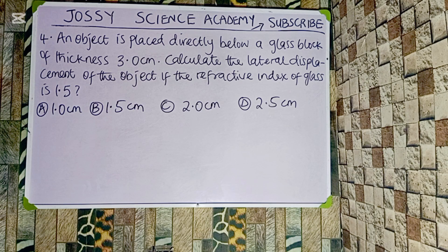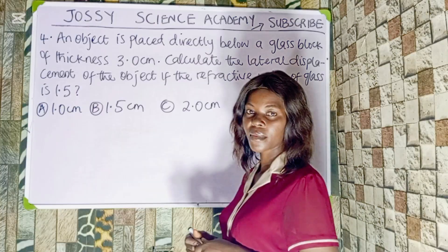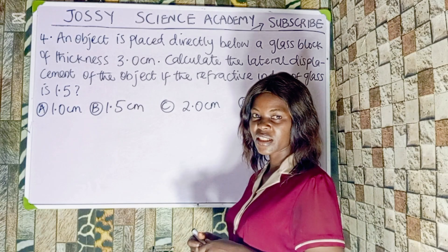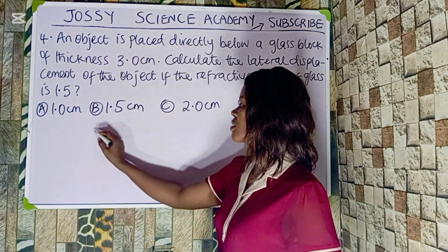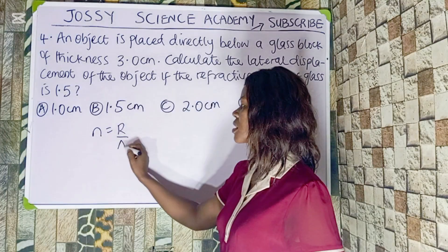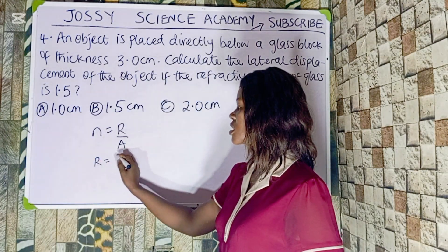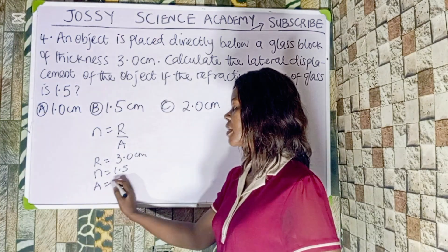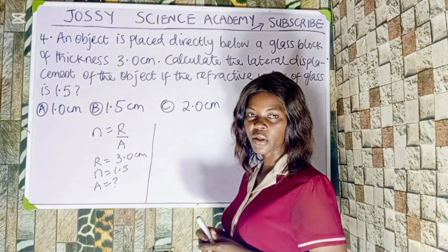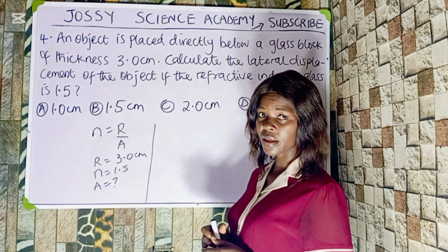An object is placed directly below a glass block of thickness 3.0 cm. Calculate the lateral displacement of the object if the refractive index of glass is 1.5. Options: A) 1.0 cm, B) 1.5 cm, C) 2.0 cm, D) 2.5 cm. This question is about relating real and apparent depth. Anytime you hear thickness of glass block, that becomes the real depth. So refractive index equals real depth over apparent depth.